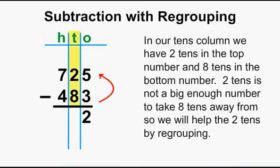In our tens column, we have 2 tens in the top number and 8 tens in the bottom number. 2 tens is not a big enough number to take 8 tens away from, so we will help the 2 tens by regrouping.